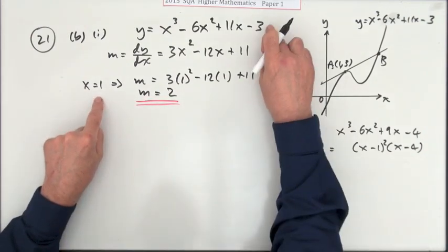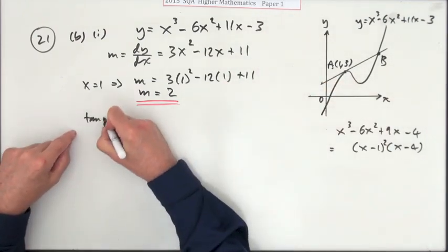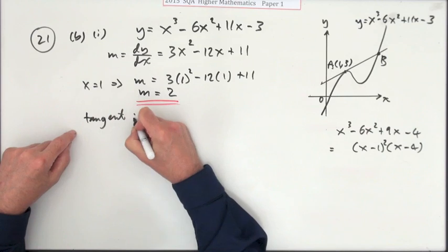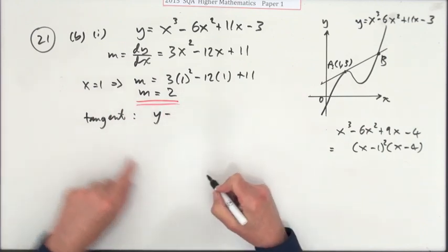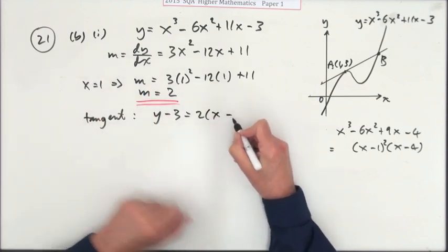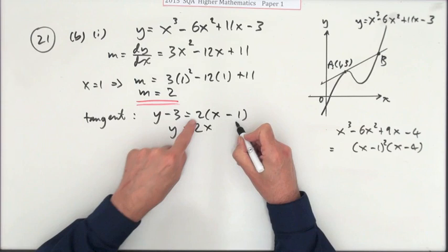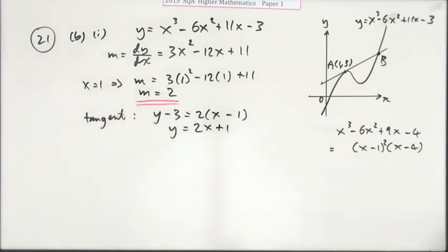I don't need to put it back into this to find the y-coordinate because it tells me it's 3. So now I can get my tangent. The tangent is going to be y - 3 = 2(x - 1), so y = 2x - 2 + 3 = 2x + 1.